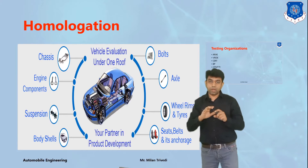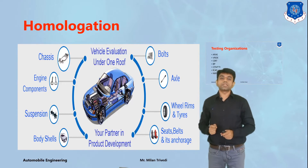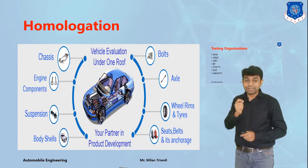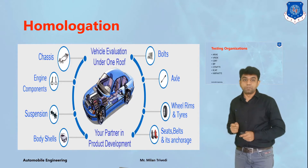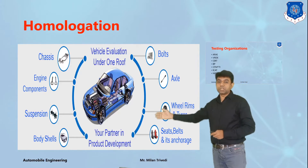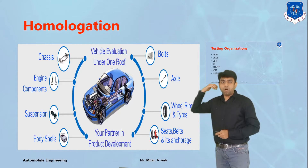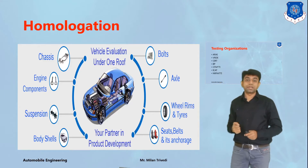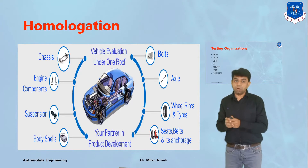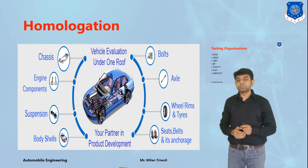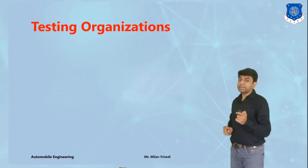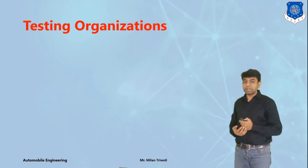The first topic in our VTH course is Homologation. Homologation is the process of getting a certificate to ensure the vehicle is roadworthy and follows all norms laid out by the government — whether it is testing of bolt axles, wheel rims, body shells, suspension, or engine components. If the vehicle satisfies and is approved under all testing, only then is it certified and can be sold in the market.